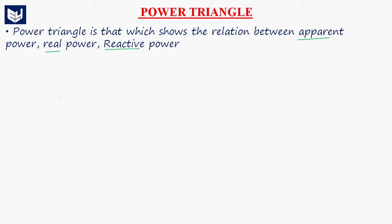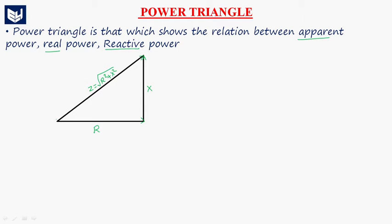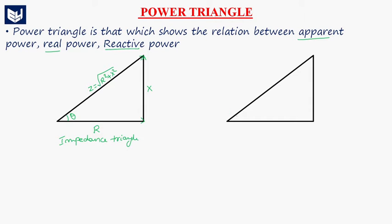Let us consider the impedance triangle. This is the impedance triangle — this is R (resistance), this one is X, and the resultant is Z. Z is equal to the square root of R squared plus X squared. This angle is the impedance angle theta. This is the basic impedance triangle. Similarly, the power triangle is also like that.